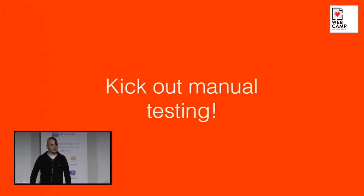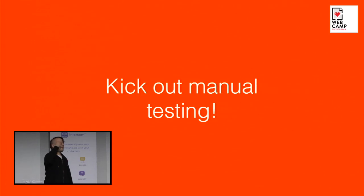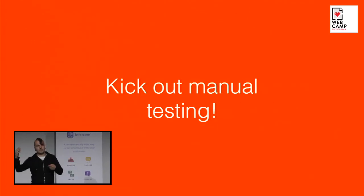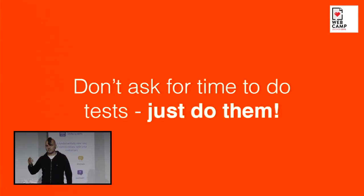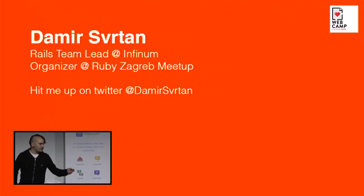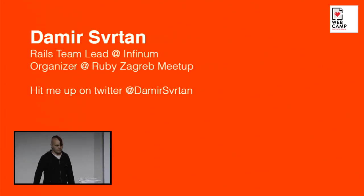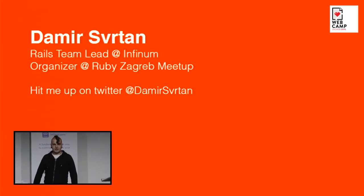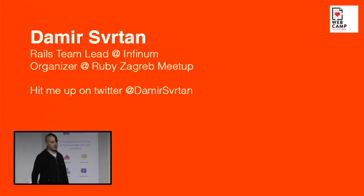In conclusion: kick out manual testing as much as you can — it's totally redundant. At some phases you may want to try something manually, but eliminate it as much as possible. Don't ask for time to write tests — just do them and make them part of your development cycle. My name is Damir Svrtan, I'm a Rails team lead at Infinum, a software development agency based in Zagreb. I'm also one of the organizers of the Ruby Zagreb meetup group. If you want to talk about Ruby or tests, hit me up on Twitter.